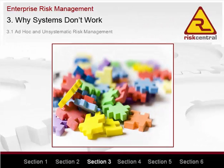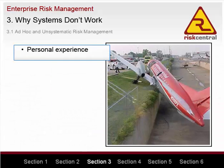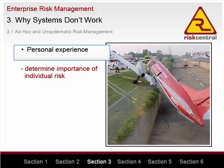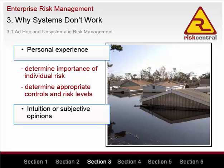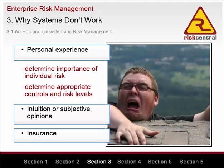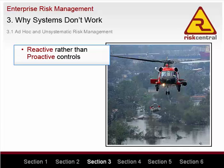Ad hoc and unsystematic risk management. A lot of traditional risk management has been based on ad hoc or unsystematic methods or approaches. These include: relying on personal experience to determine how important individual risks are — in other words, making sure you don't make the same mistake twice; relying on personal experience to determine appropriate controls and risk levels — famous last words: 'I have been doing it this way for 10 years and nothing has ever gone wrong'; relying on intuition or subjective uneducated opinions; thinking that insurance equals risk management; and having an emergency response plan — that is, relying on reactive rather than proactive controls.